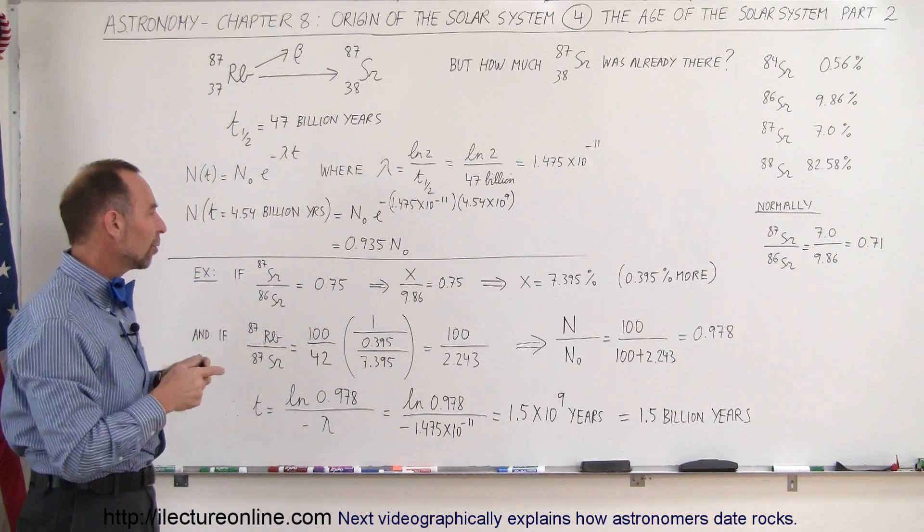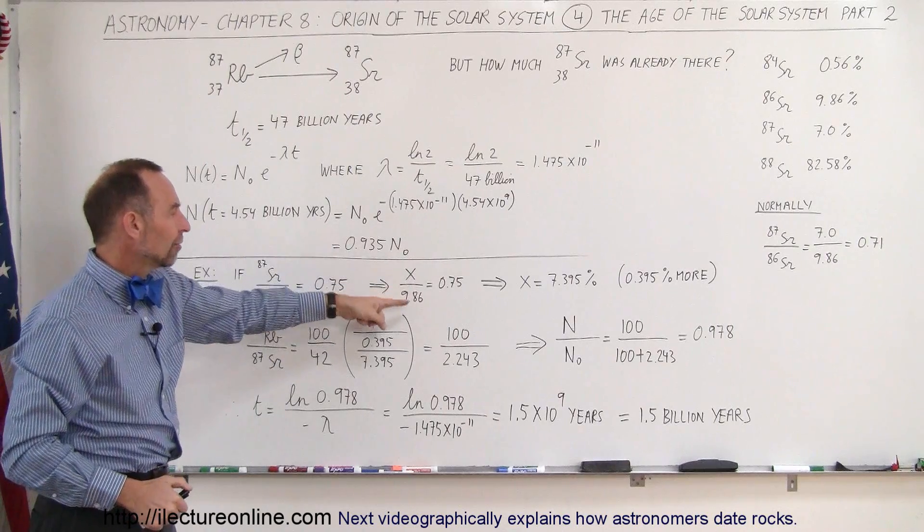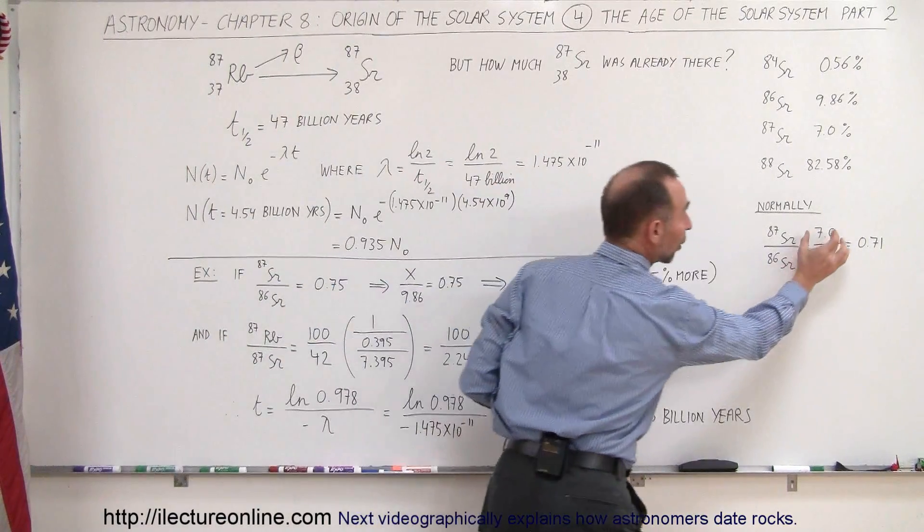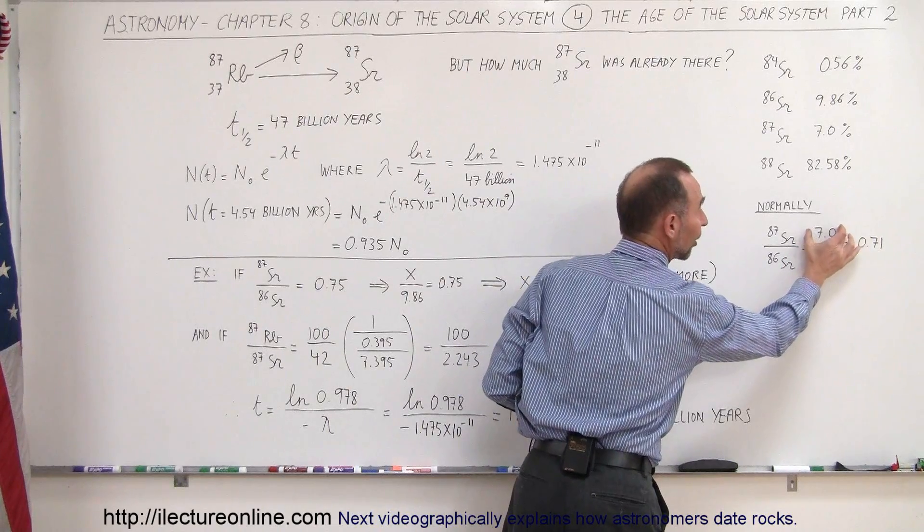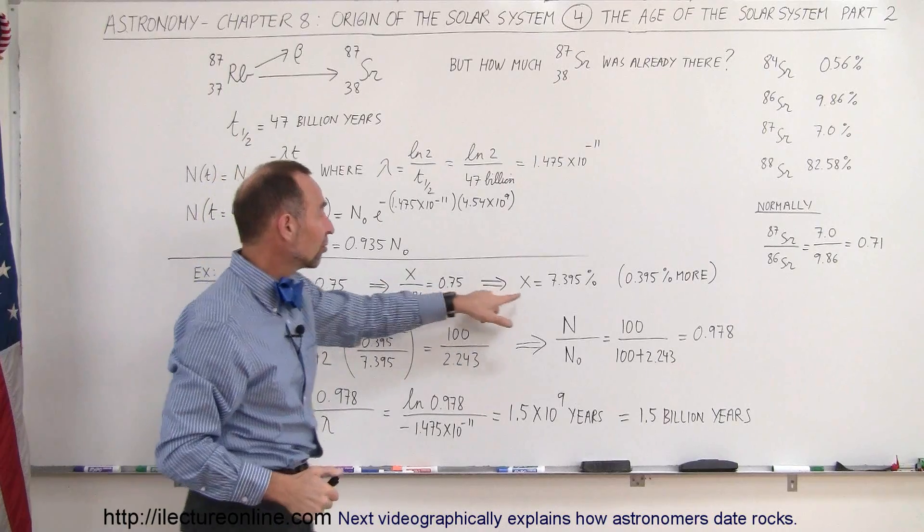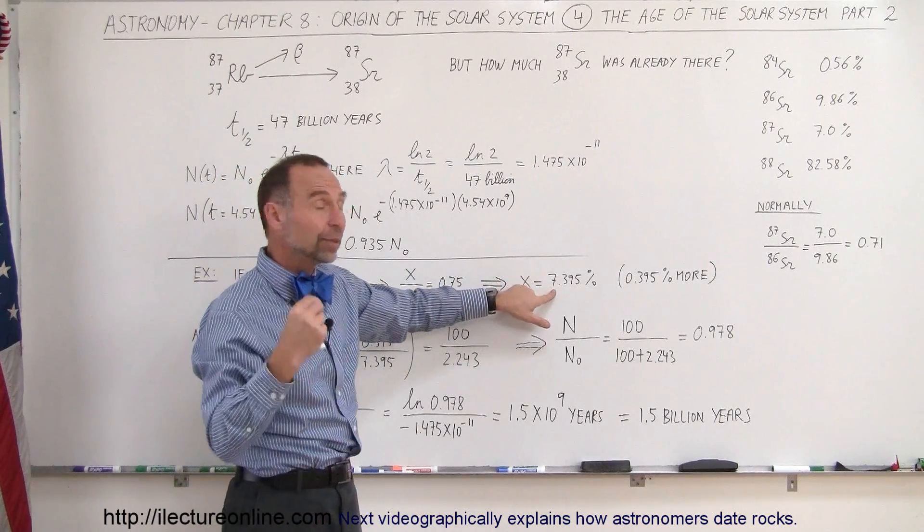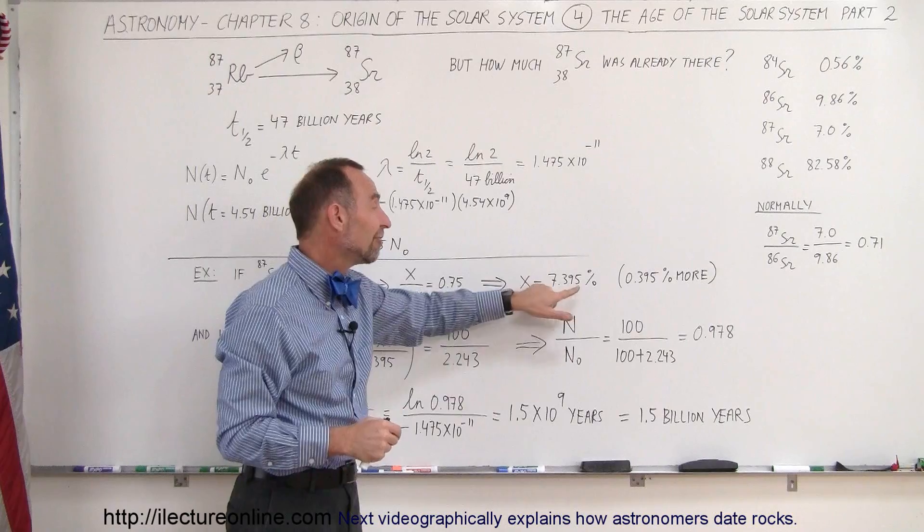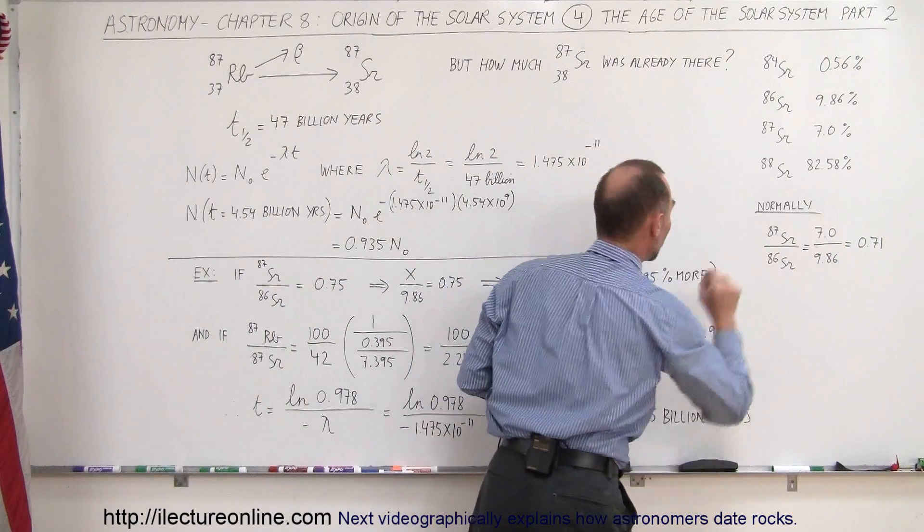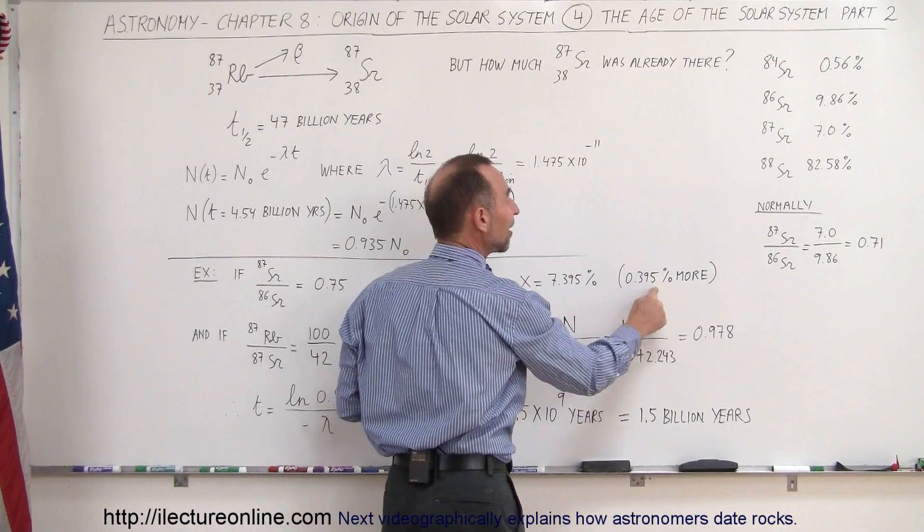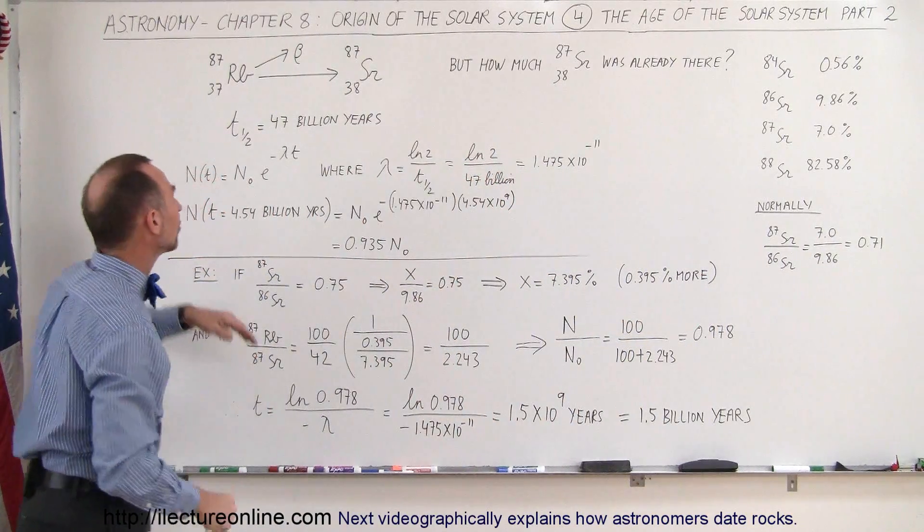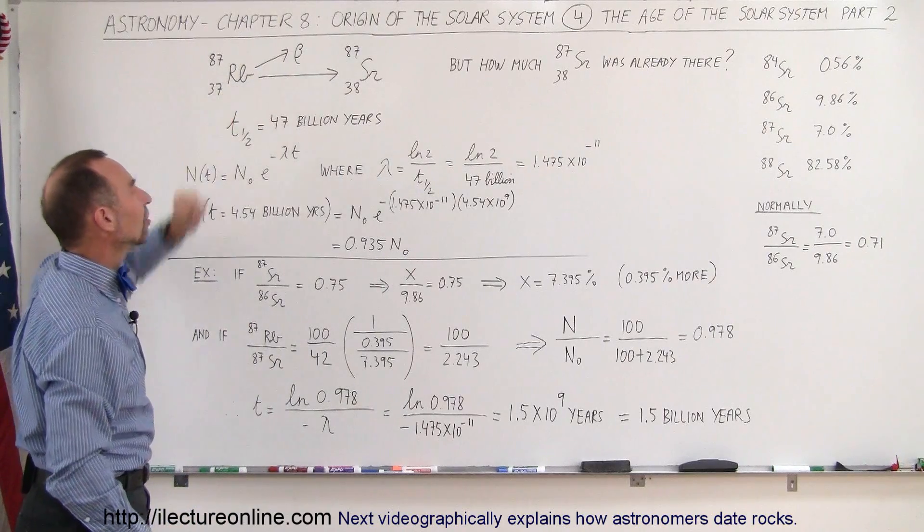What is that excess? Well, it'll be X divided by 9.86 equals 0.75. So we're looking for how much is actually there. It's not going to be 7%, it's going to be a greater percentage. So when we solve this equation for X, we find that in this particular rock, there was 7.395% Strontium compared to the normal 7.0%, which is a 0.395% greater abundance of that Strontium-87, which must have come from the decay of Rubidium-87.